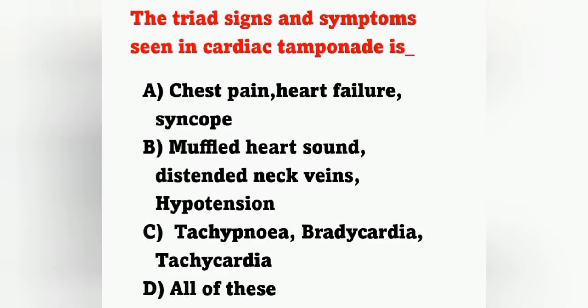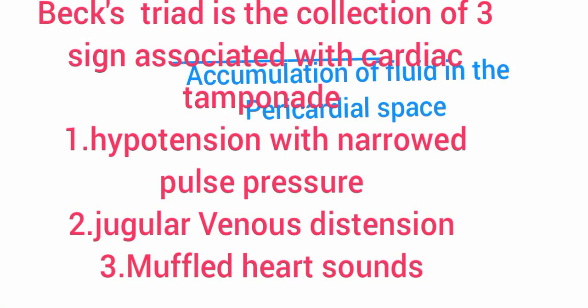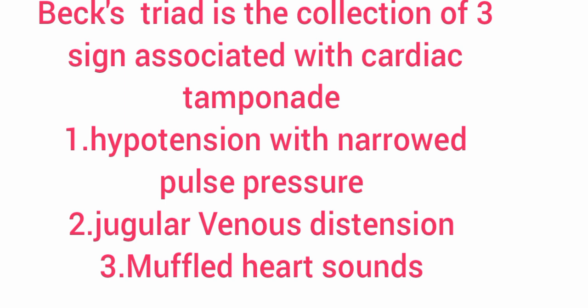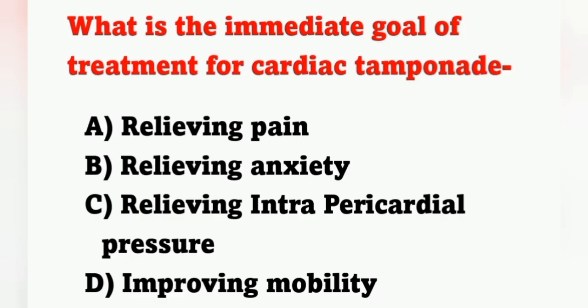Next question: the triad of signs and symptoms seen in cardiac tamponade is? Options: A) Chest pain, heart failure and syncope, B) Muffled heart sound, distended neck vein and hypotension, C) Tachypnea, bradycardia and tachycardia, D) All of these. Cardiac tamponade is accumulation of fluid in the pericardial space. The classical symptoms are known as Beck's triad: hypotension with narrowed pulse pressure, jugular venous distension, and muffled heart sound. Option B is the correct answer.